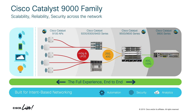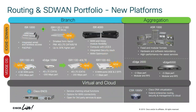iOS XE itself is common between the switches, the wireless, and the routers. You just heard about SD-WAN — the ISR series, the ASR 1000 series, and the CSR 1000V are all running iOS XE. So on a software layer, how BGP behaves, how IPsec behaves — it's now standardized across routers, switches, and wireless.